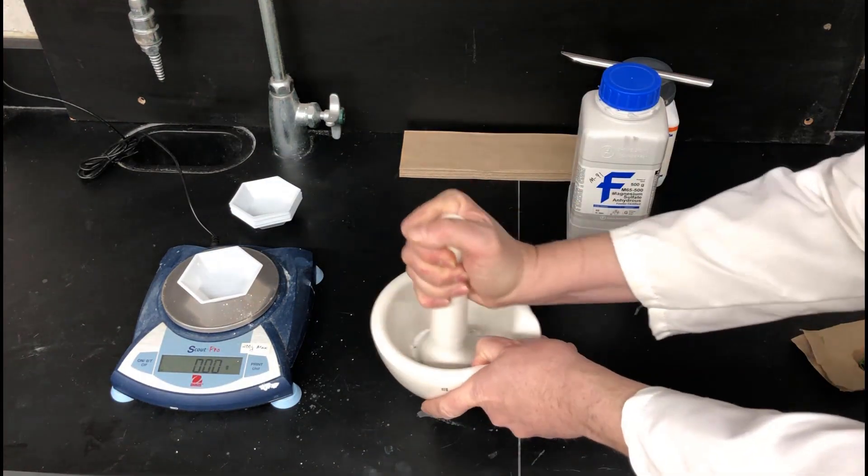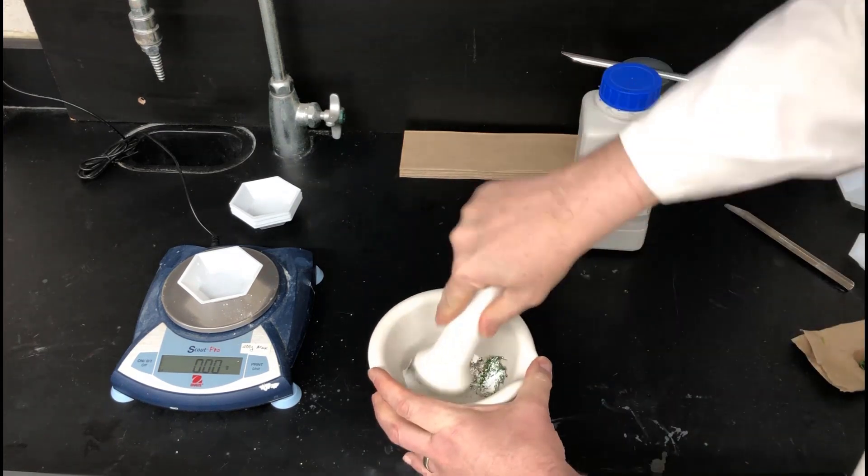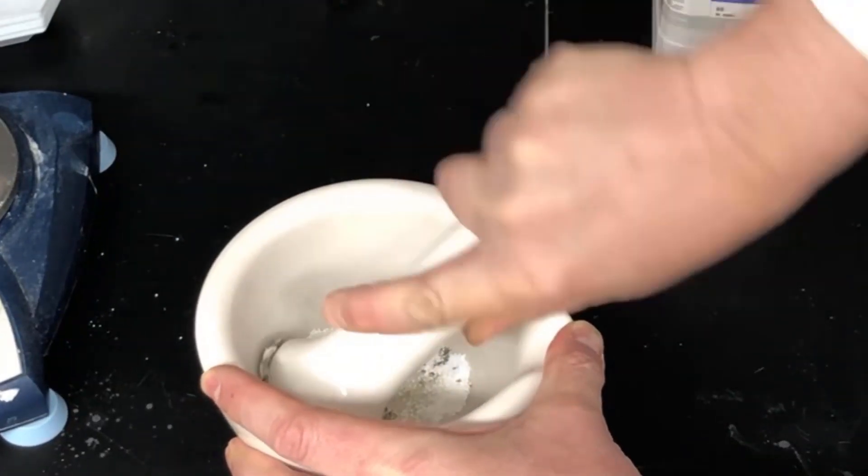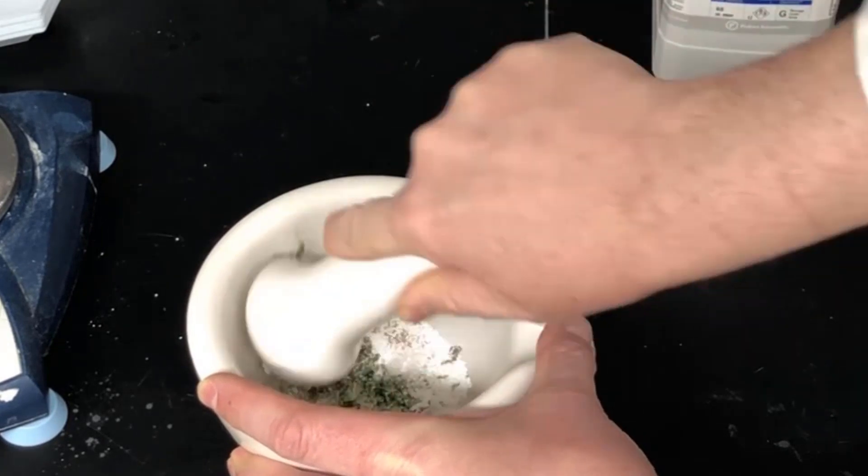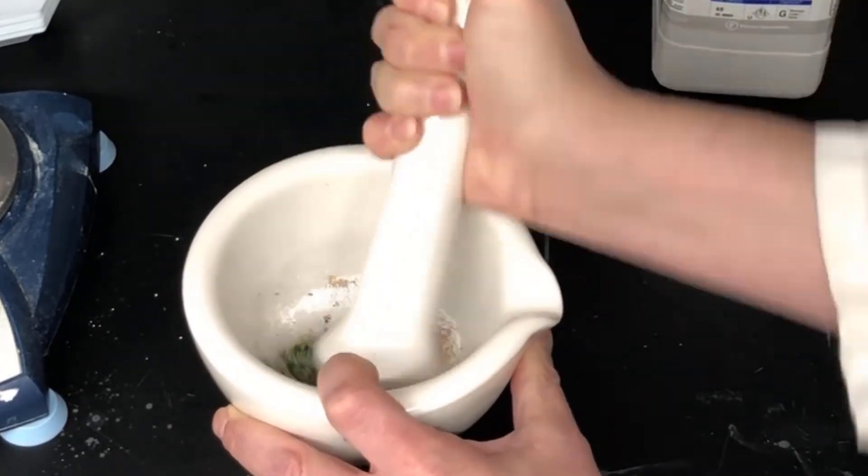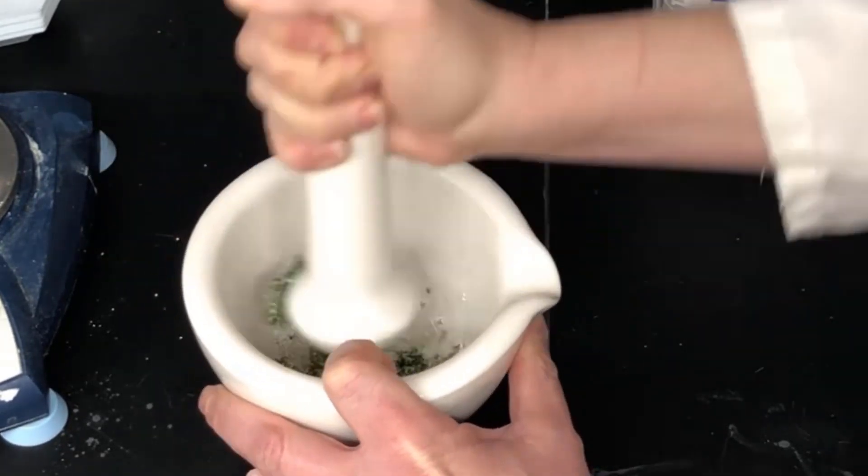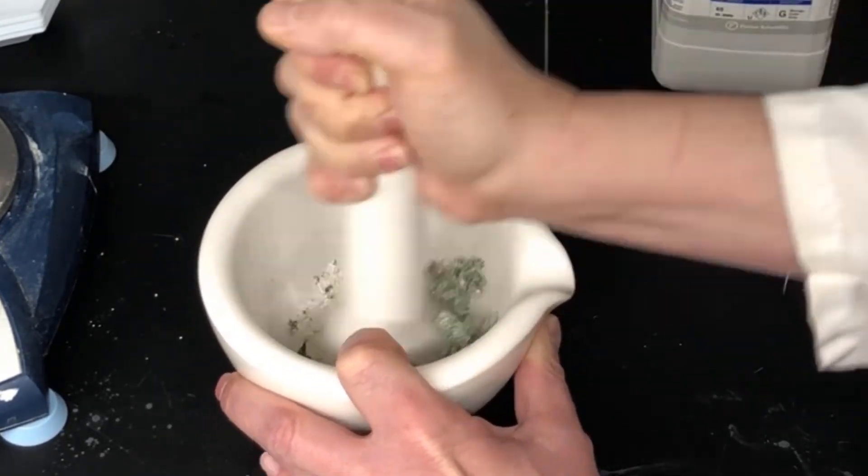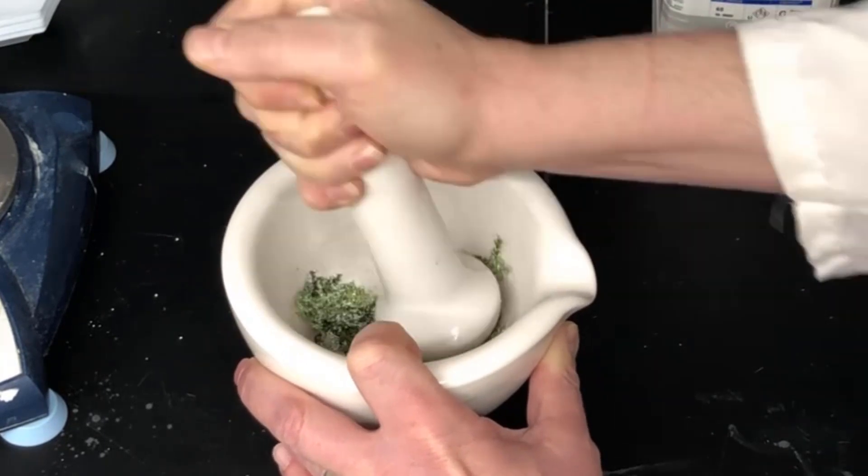Then you need to grind this. You're going to want to really put your back into this. You have to really press pretty hard. You have to press the drying agent and the sand into the leaves and sort of pound them and squish them and crush them and just basically try to homogenize that mixture.